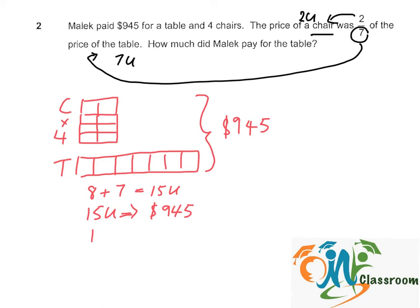So 1 unit will be $945 divided by 15. That will give us $63.